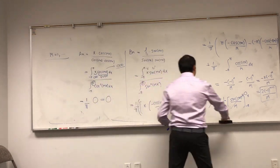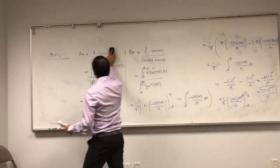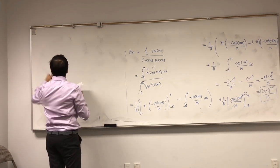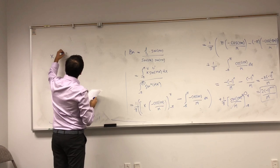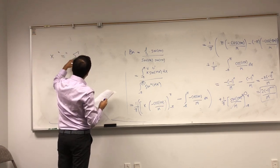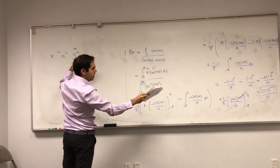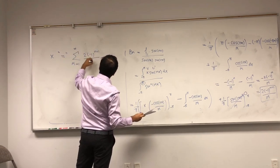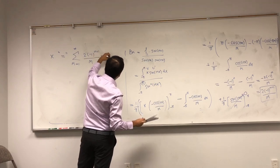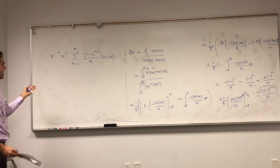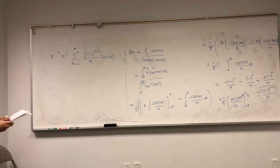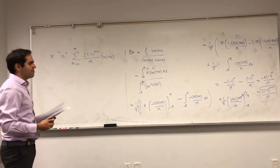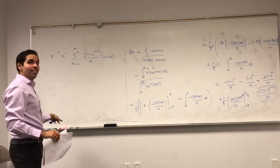So in the end, you find that your function x can be written as: x is approximately equal to the sum from m equals 1 to infinity of 2 times (-1)^(m+1) over m, times sine(mx). You've written x as a function of squiggly lines, and you can do this with any function.